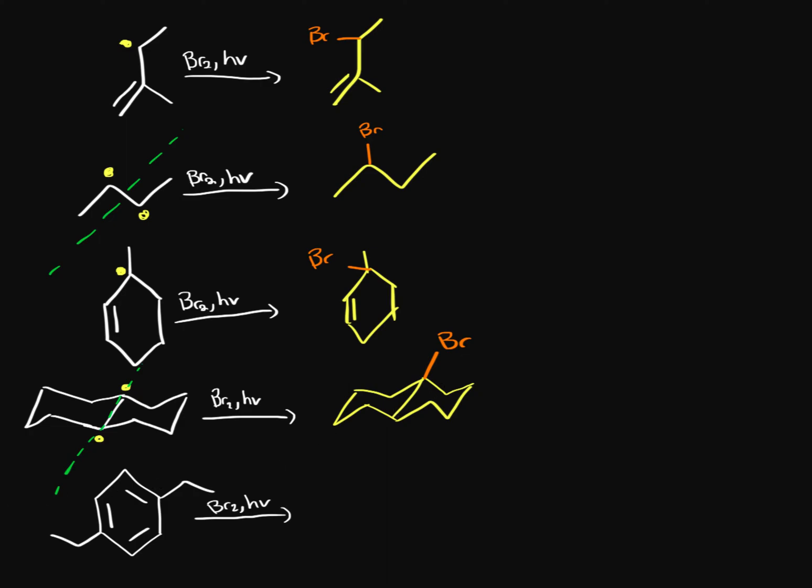On this last one, then again we have benzylic positions, so those are probably the most stable. We have a secondary benzylic here but then we also have another secondary benzylic here. So which one is it going to be? Is it going to be two products?